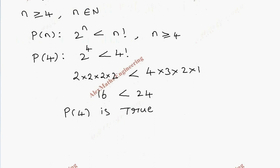Now we are going to assume P(k) is true. So assume P(k) is true. The expression for P(k) is 2^k is less than k factorial, where k is greater than or equal to 4.